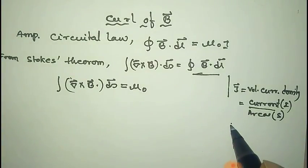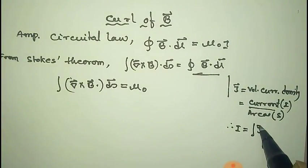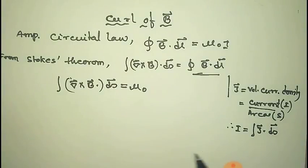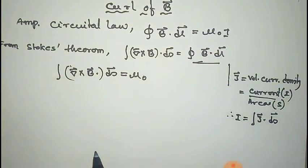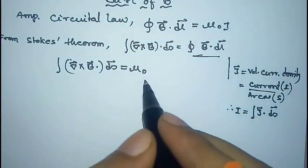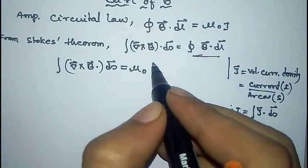So we can write I as the integral ∮j·ds. Now we can replace this I with this integral, so it becomes ∮j·ds.